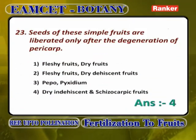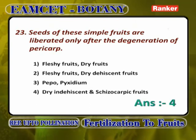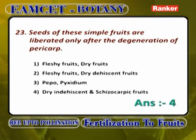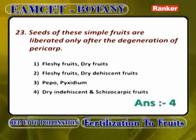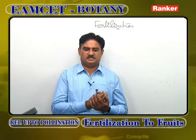Seeds of these simple fruits are liberated only after the degeneration of pericarp. In dry indehiscent fruits and schizocarpic fruits, seeds are liberated only after the fruit wall completely disintegrates. Schizocarpic fruits show both dry dehiscent and dry indehiscent characters. So, dry indehiscent fruits and schizocarpic fruits are the only fruits where seeds are liberated only after disintegration of pericarp.